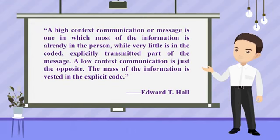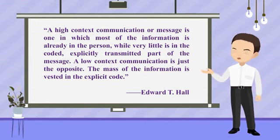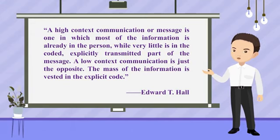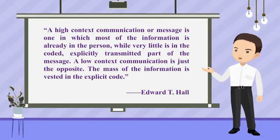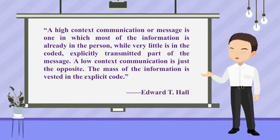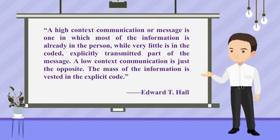A high context communication or message is one in which most of the information is already in the person, while very little is in the coded, explicitly transmitted part of the message. A low context communication is just the opposite — the mass of the information is vested in the explicit code.